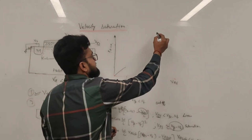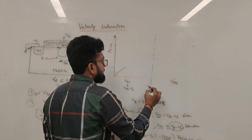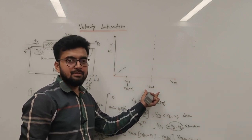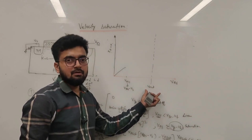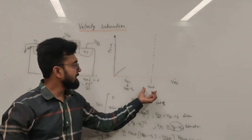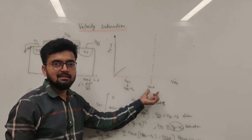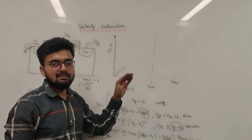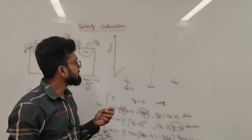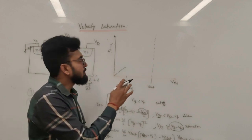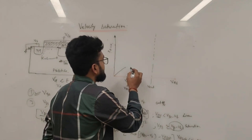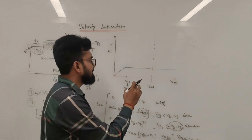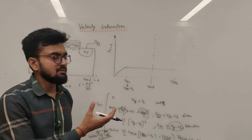We can mark the point VDSat — the drain-to-source voltage at which we get maximum drift velocity, where velocity saturation comes into play. If VDS increases beyond VDSat, the current becomes constant. However, for low VGS, the regular saturation itself occurs before this VDSat point, so the effect of velocity saturation is not significant for low VGS.